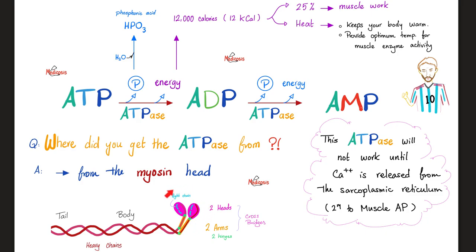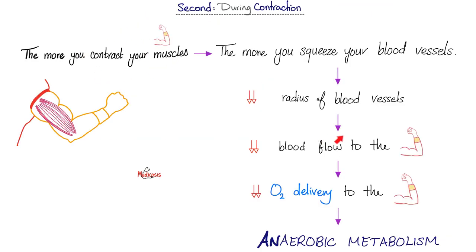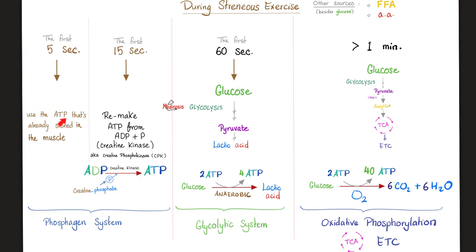The ATPase is in the myosin heads. During strenuous exercise, squeezing blood vessels makes it anaerobic. In the first five seconds, use stored ATP. For the next 15 seconds, make new ATP from ADP using phosphate from creatine phosphate — together called the phosphagen system. After the first 15 seconds, use glycolysis (anaerobic), giving a net of two ATPs. After the first minute, use the TCA cycle and electron transport chain, giving a net gain of 38 ATP molecules.